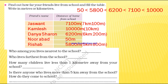The smallest distance is Noorabad, 50 meters. To compare large numbers, we have to count the digits of each number. For example, Jaswant has four digits. Kamlesh has five digits. Dhanushwaran has four digits. Noorabad has two digits. Rishabh has a four-digit number.